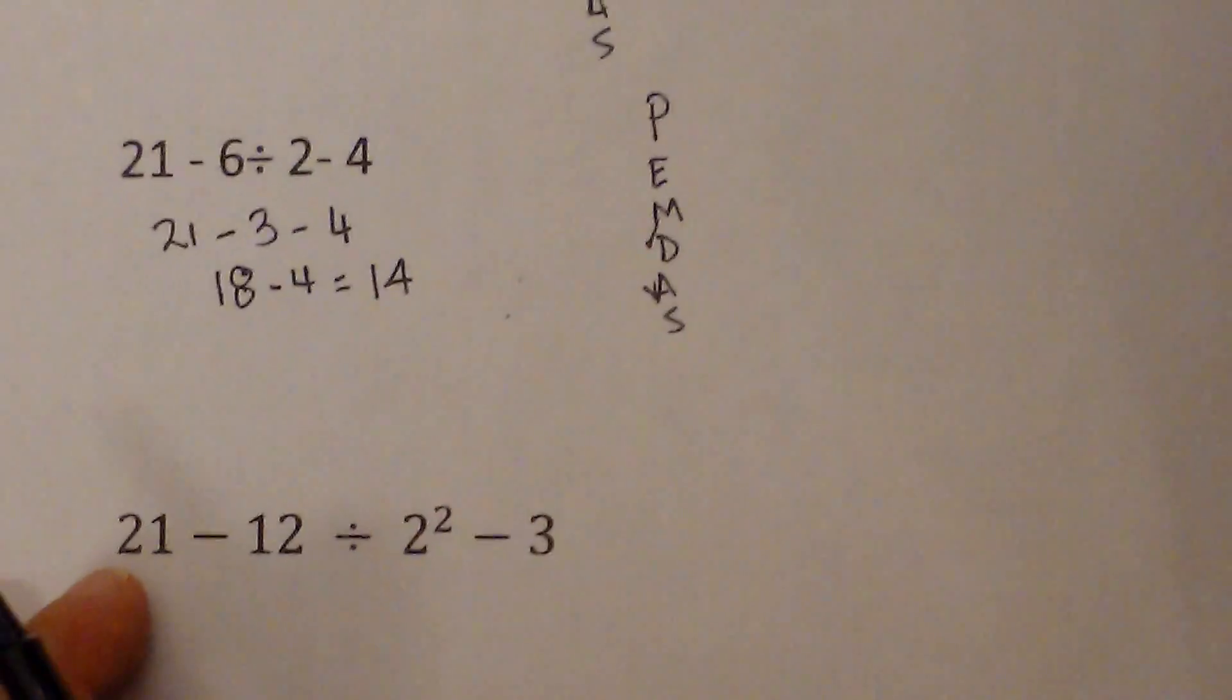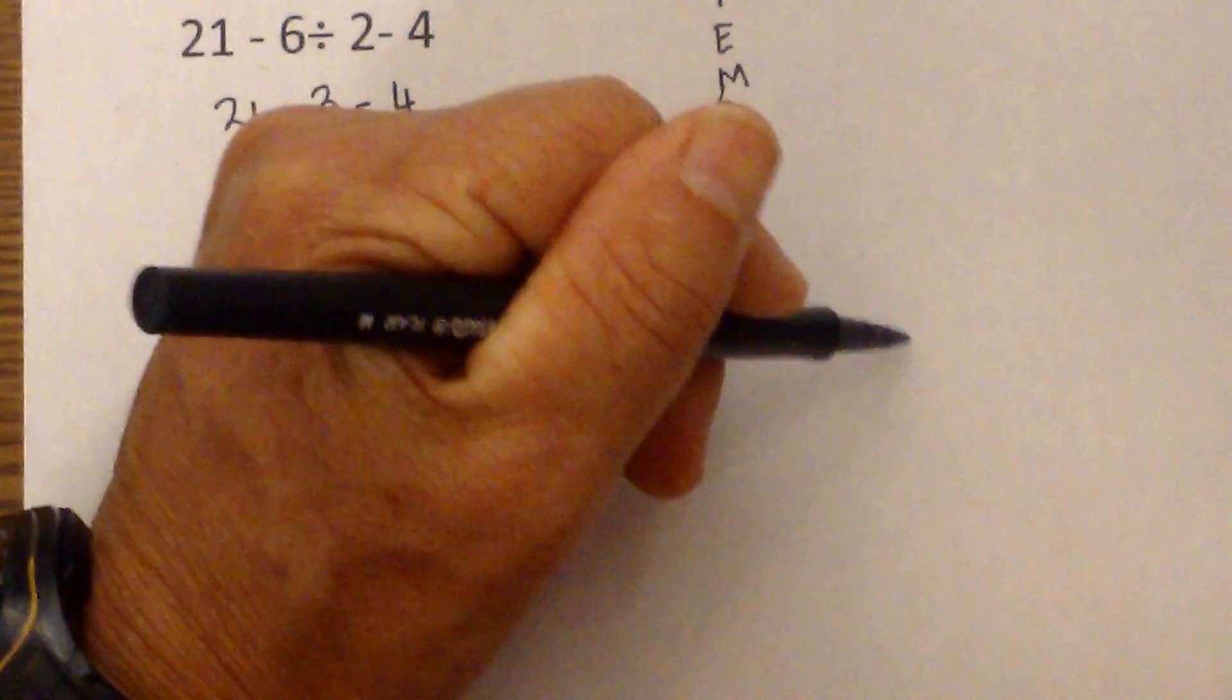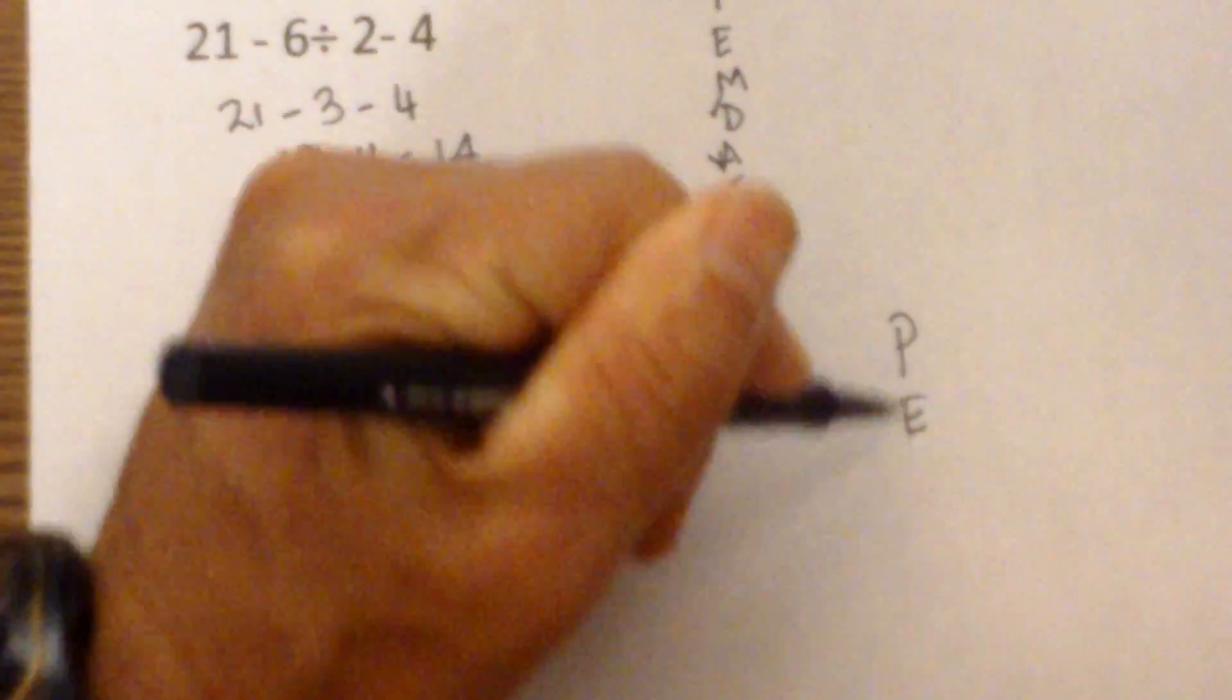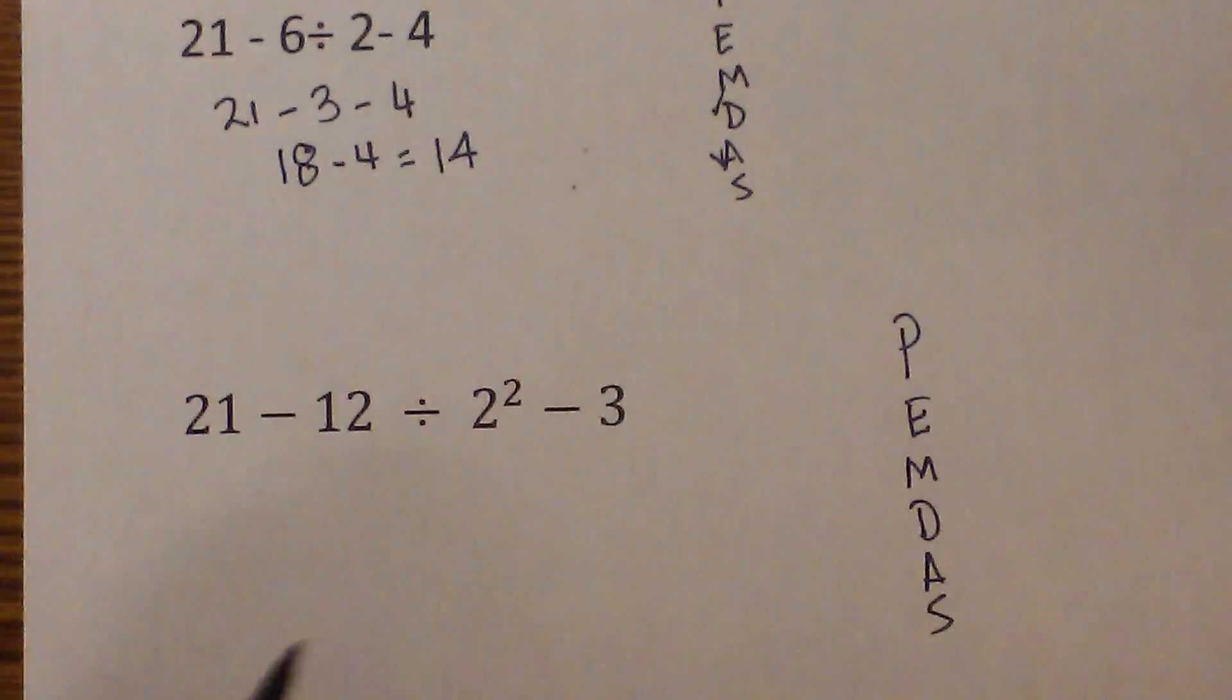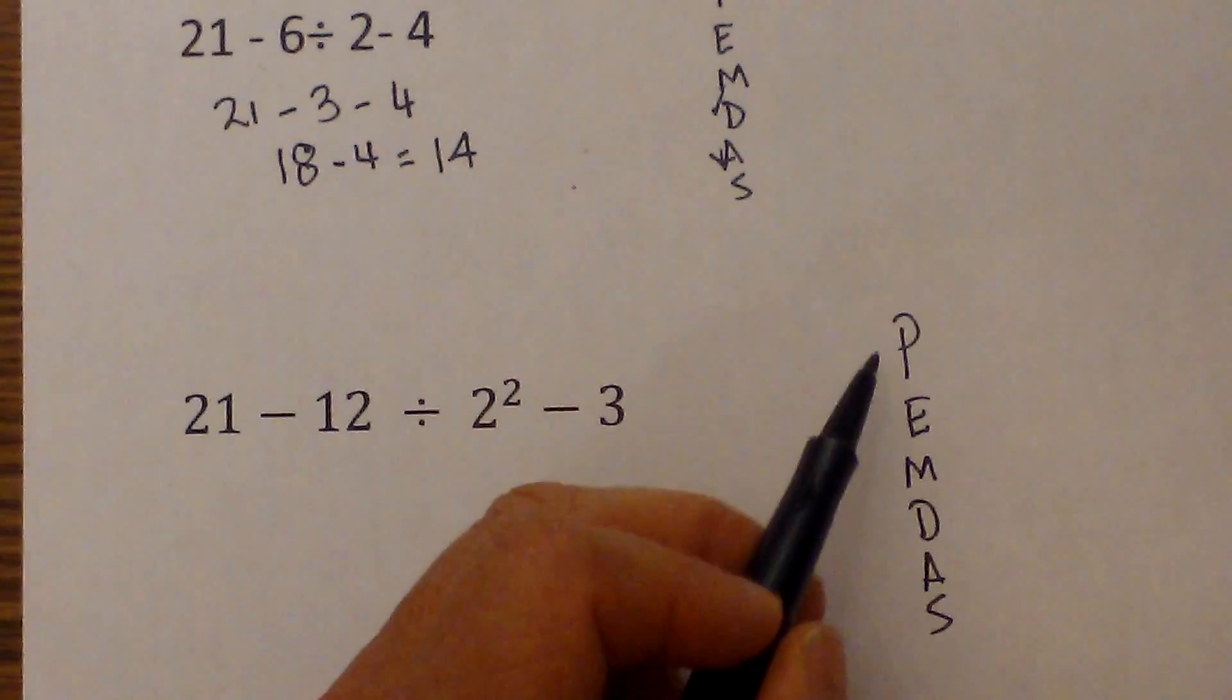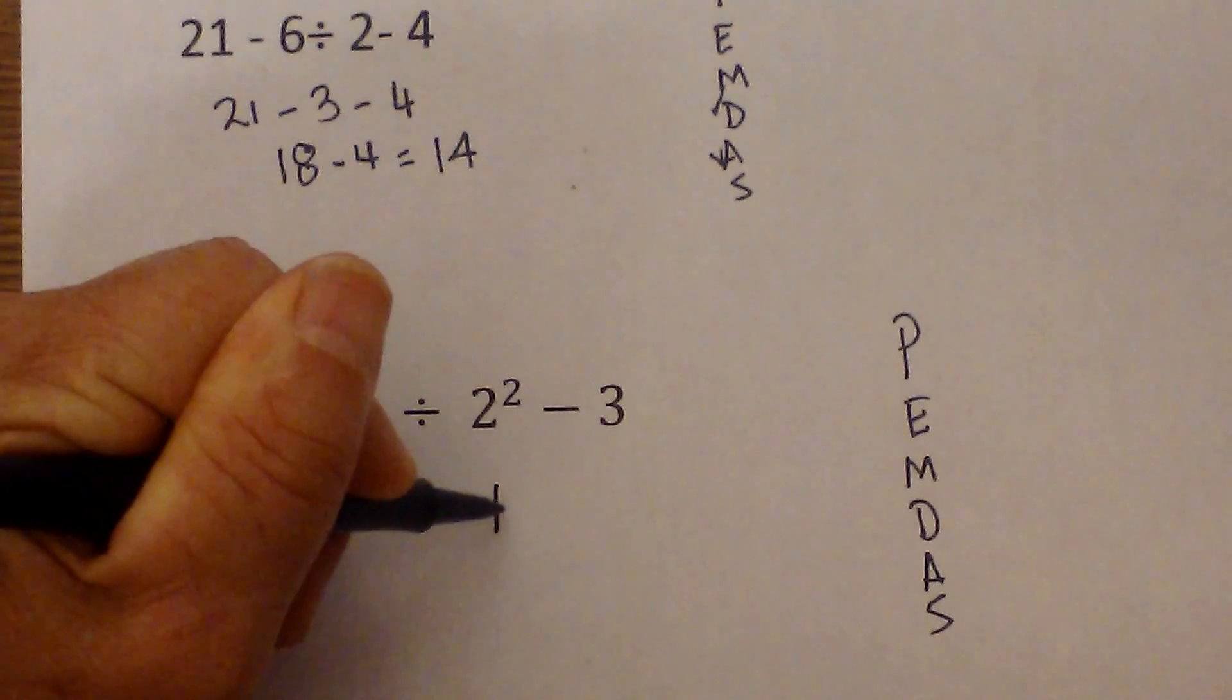And finally, hopefully we're beginning to get this just a little bit. Let's move on to the next one again. And I'm repeating this every time. Parenthesis? No. Exponents? Yes. 2 squared is 4.